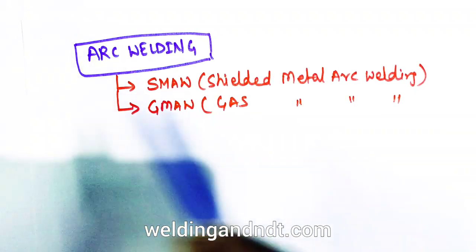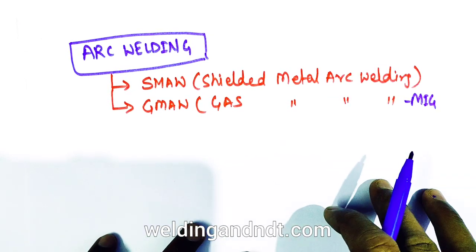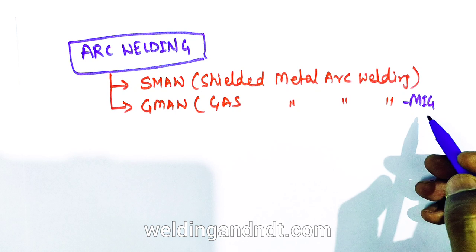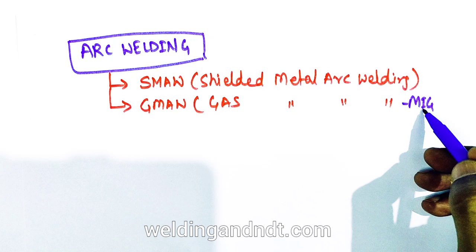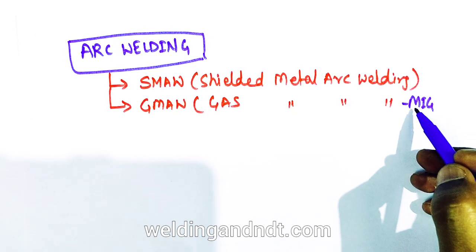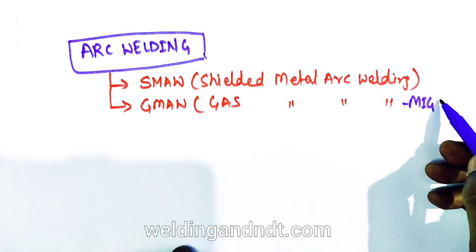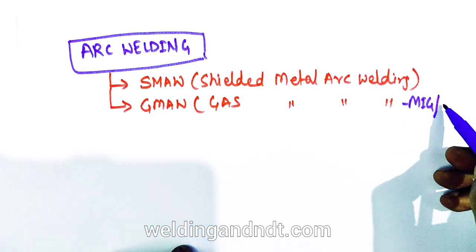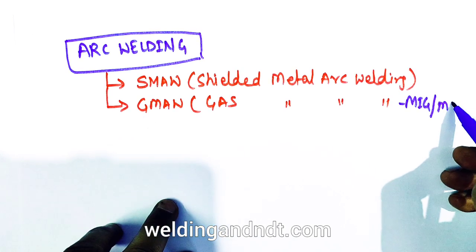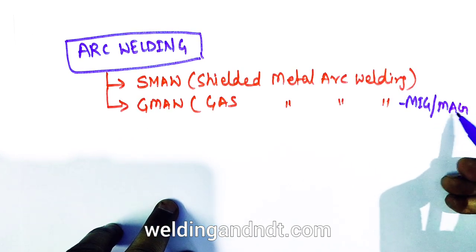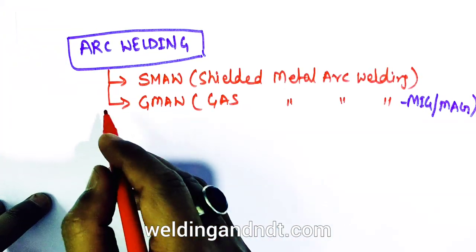When an inert shielding gas is used in GMAW, it is called MIG — metal inert gas. When a reactive gas like CO2 is used, it becomes MAG — metal active gas. These are different names for the same GMAW process depending on the shielding gas used.